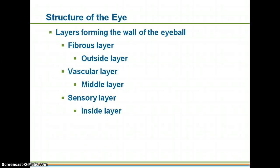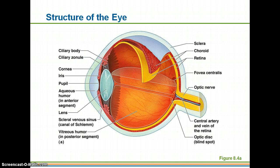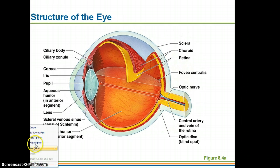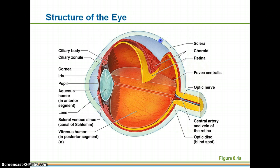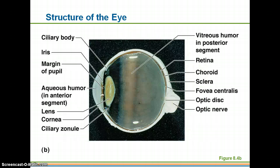We'll pick back up with the structure of the eye. As mentioned in the notes yesterday, we do have layers that form the wall of the eyeball — three layers: the outside layer, the middle layer, and the inside layer, each serving different functions. We have the fibrous layer, the vascular layer, and the inner neural layer, the retina.